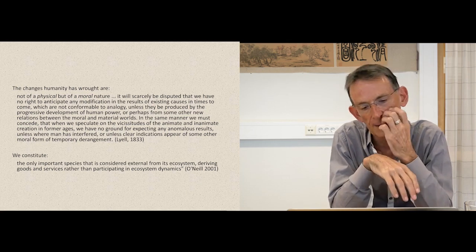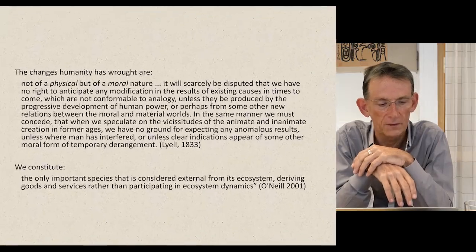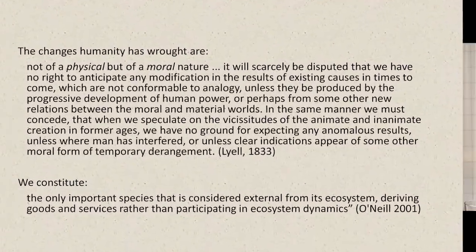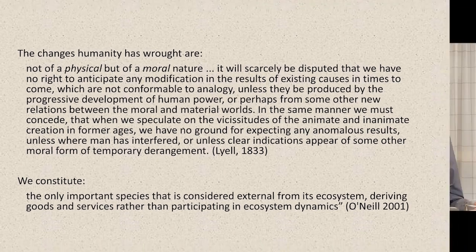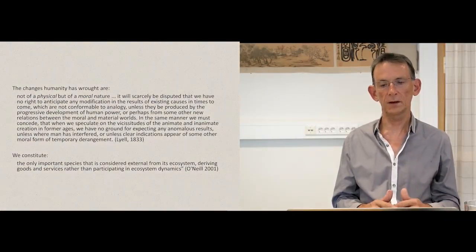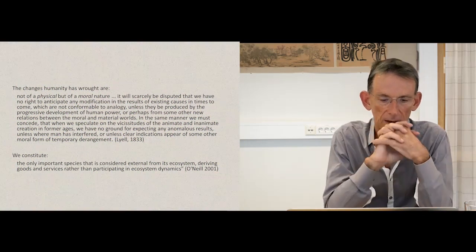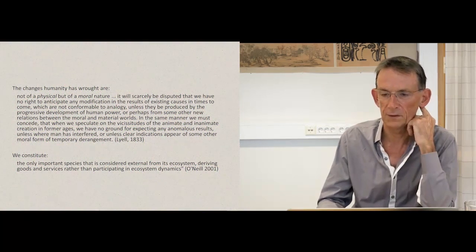So there is a single history to the earth — despite the appearance of progress, despite the appearance of change, actually it's all pretty much the same. Lyell gets through this by taking us out of the flow of history and saying humans are not really part of the flow of history — everything will go back to normal if humans went away again. Jumping forward 170-odd years, William O'Neill comments that we are the only important species considered external from its ecosystem, deriving goods and services rather than participating in ecosystem dynamics — again, this idea that humans are outside of the flow of history.